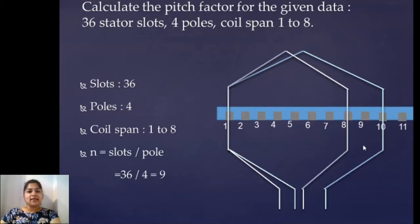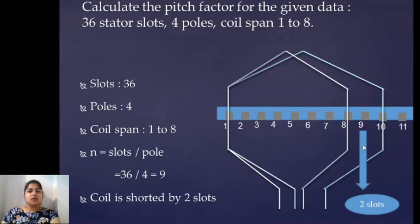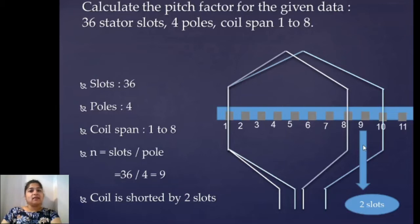So the coil is shorted by two slots. Take care of this concept: by numbers you may feel that N is 9 and coil span is 1 to 8, so it is shorted by one slot — but that is not the case. When N is 9 the full pitch coil goes from 1 to 10, and given data shows 1 to 8, so it is shorted by two slots. This is very important, otherwise you will wrongly calculate angle alpha as well as kp.